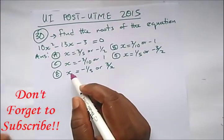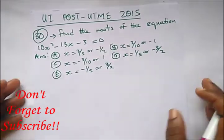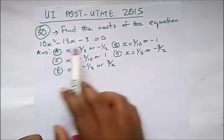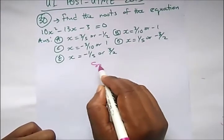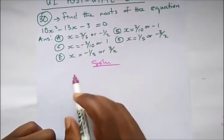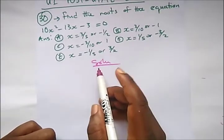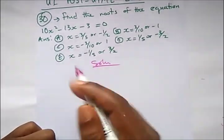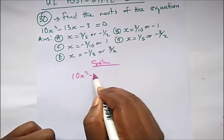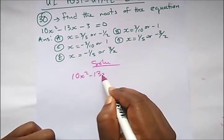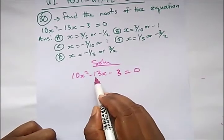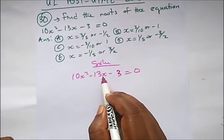So we have question number 30. It says: find the roots of the equation. So how do we do this? Remember factorization — I've treated this topic on my channel, so try to go watch the video to understand better. All we need to do is find the factors that would add or subtract to get 13.